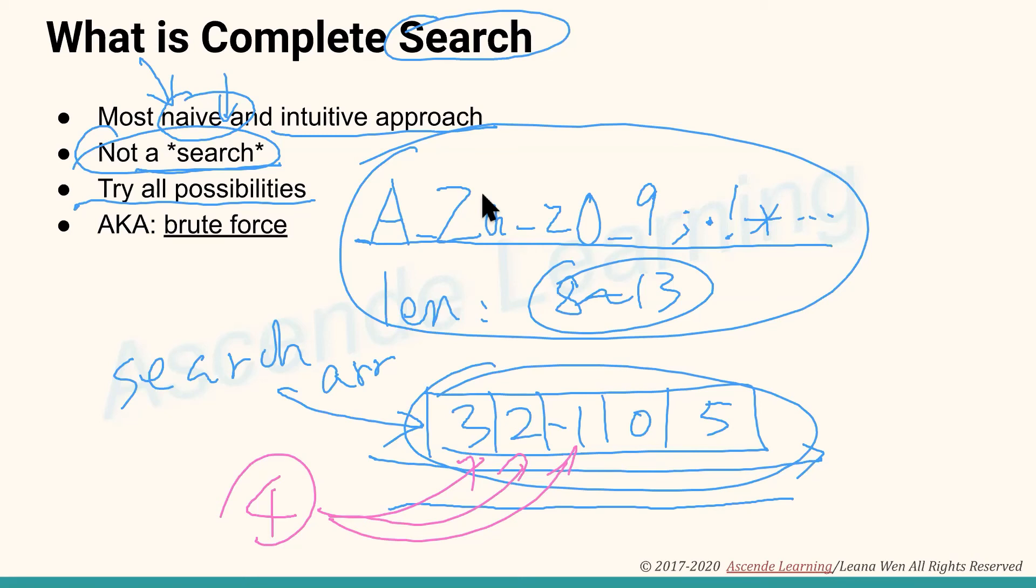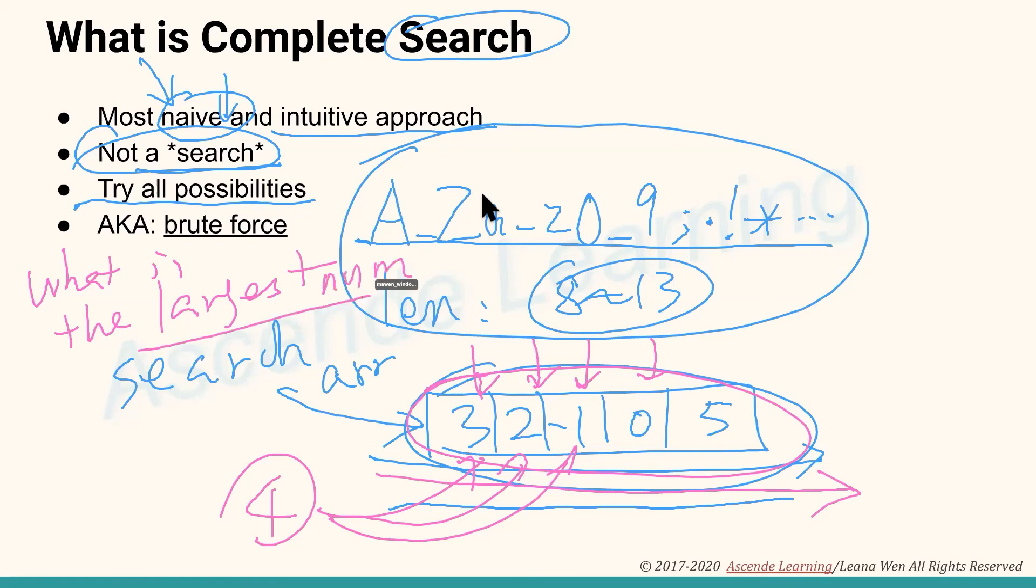but it's actually very useful because it can actually allow you to solve a lot of problems. Another example is if I ask you to find what would be the maximum, the largest number out of an array, what you do is that you have the largest number could be any of this number, and you're going to just try out all these numbers, and you do your comparison, and you have to go through entire collections of data before you find your largest number from the entire collection. So that's really the mindset of complete search.